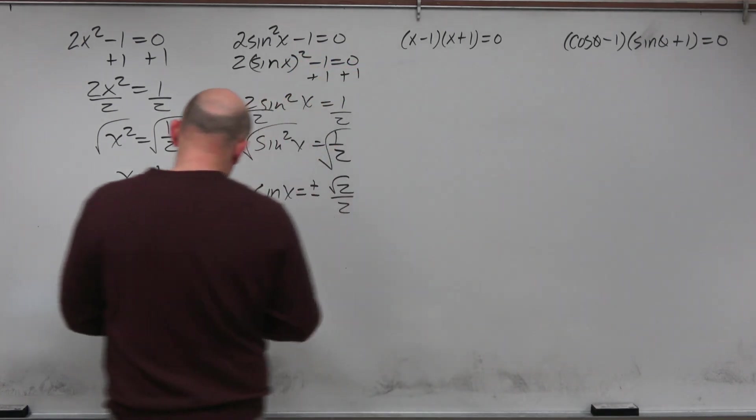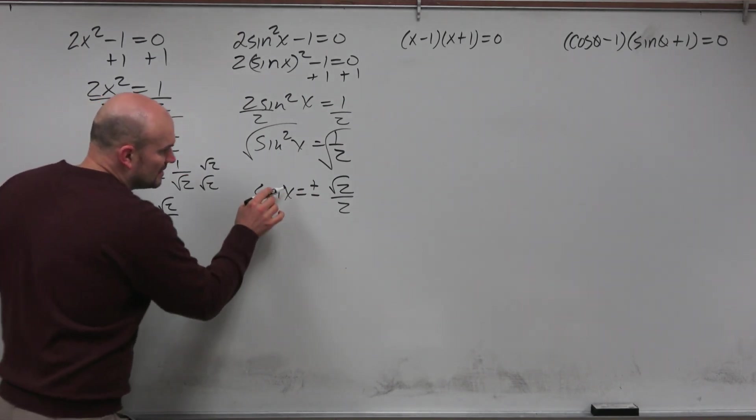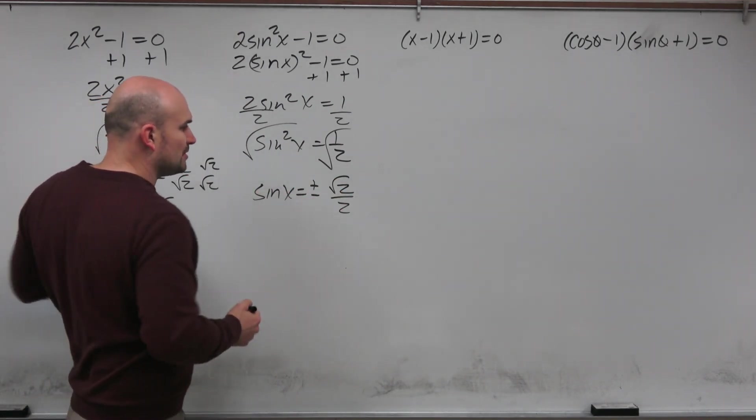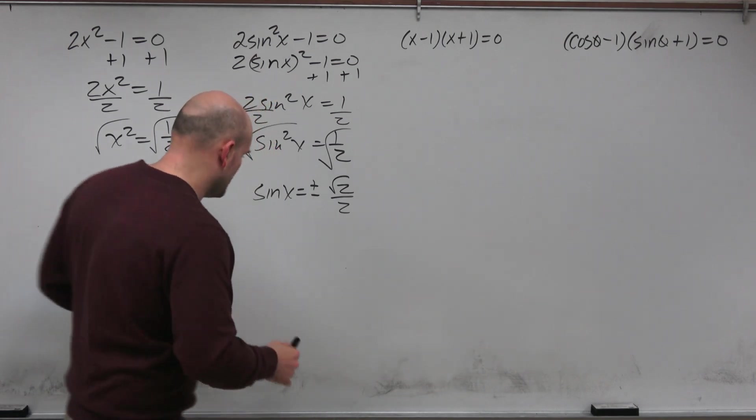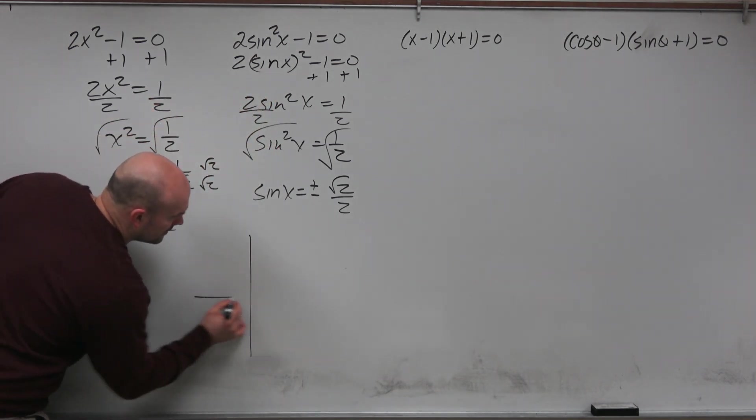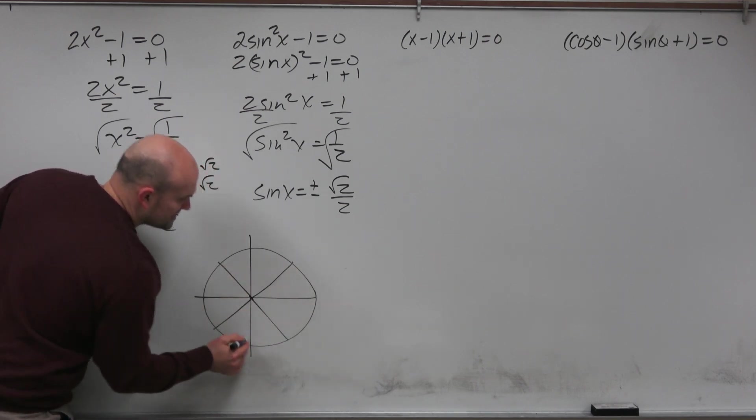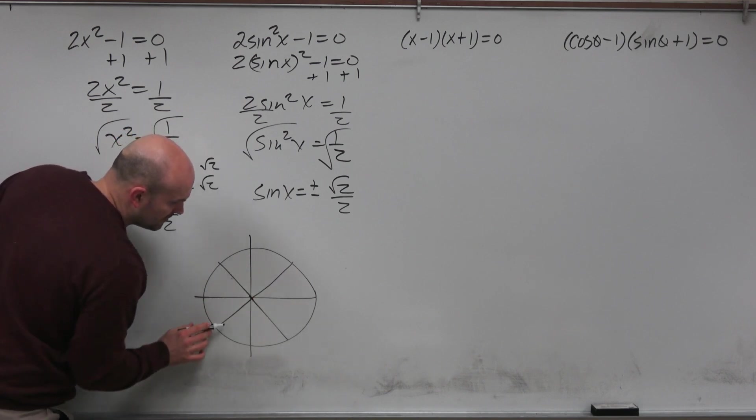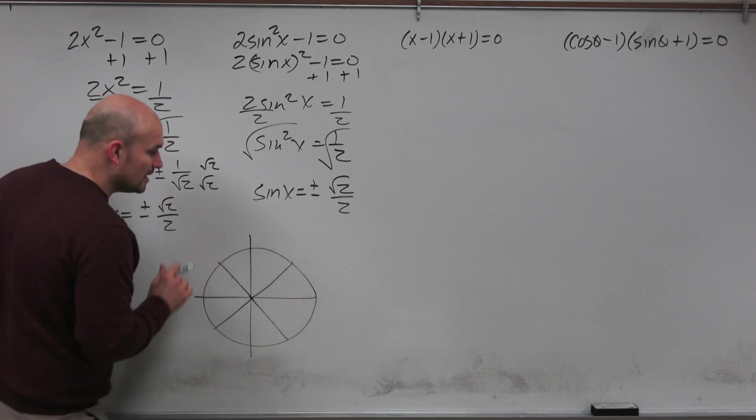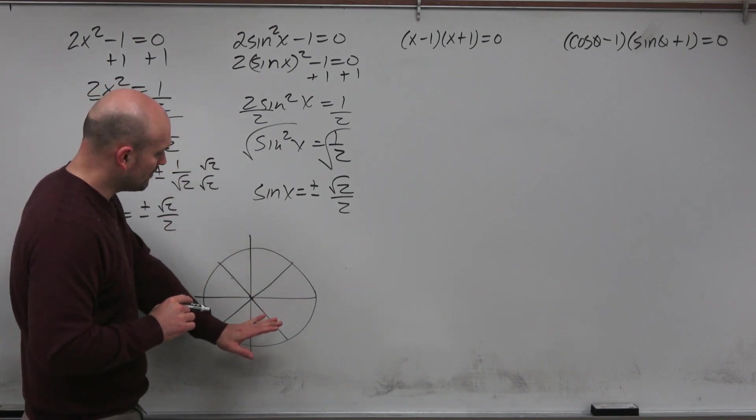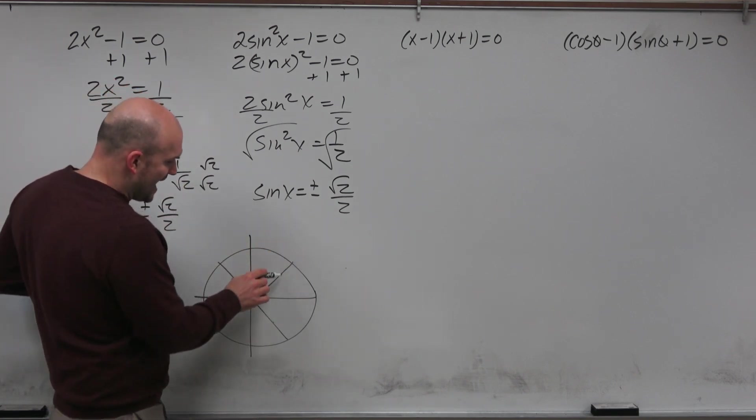So we need to think about the unit circle. Like, for what values, for the sine of what values, is going to give me plus or minus the square root of 2 over 2. And it's not just one value, because I didn't give you any restrictions. So if you look at the unit circle, you can see these angles here. It's going to be pi over 4, 3 pi over 4, 5 pi over 4, and 7 pi over 4. But furthermore, what I want you to recognize is I could add all these angles.